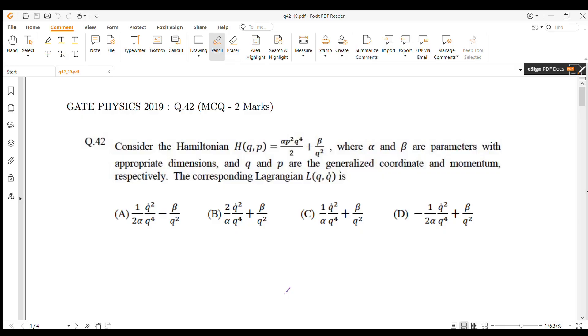Hello everyone, in this video I shall discuss the solution of question number 42 of GATE Physics 2019. This is a multiple choice question. Consider the Hamiltonian H equals alpha p squared q to the power 4 by 2